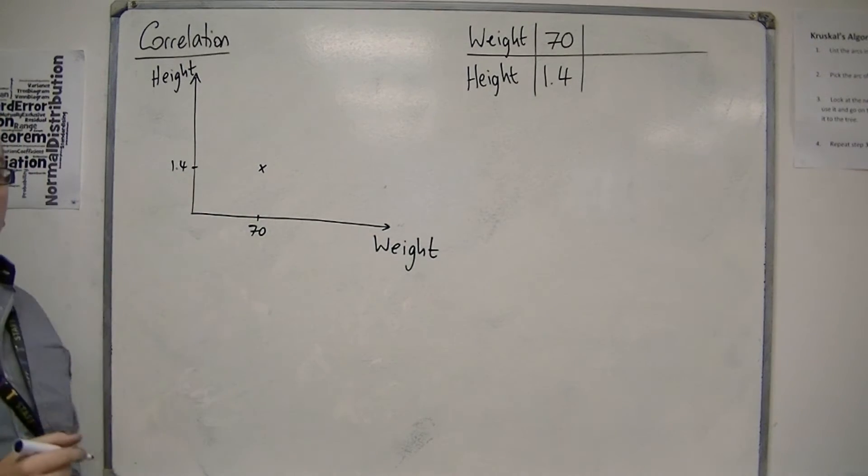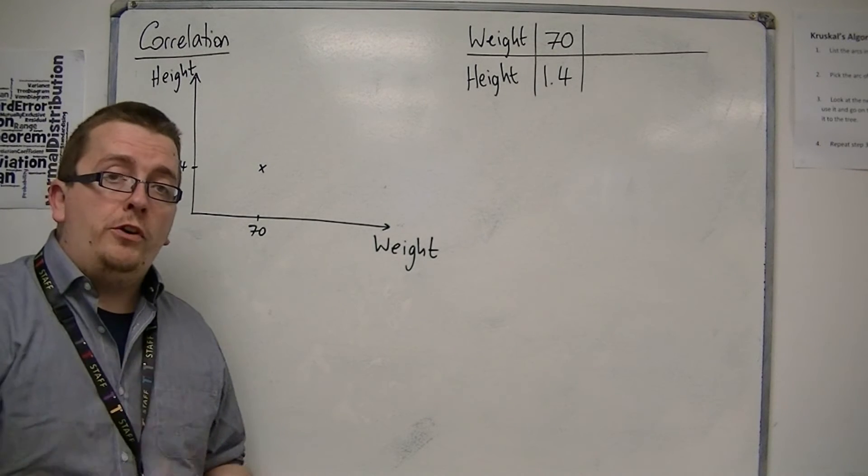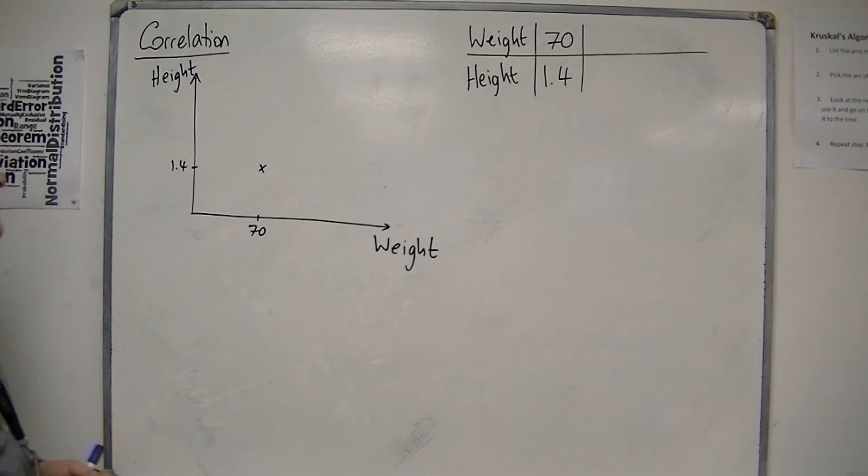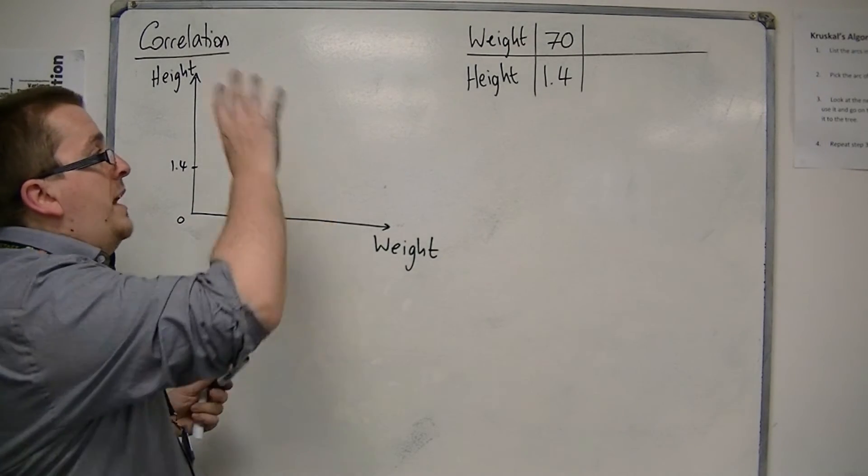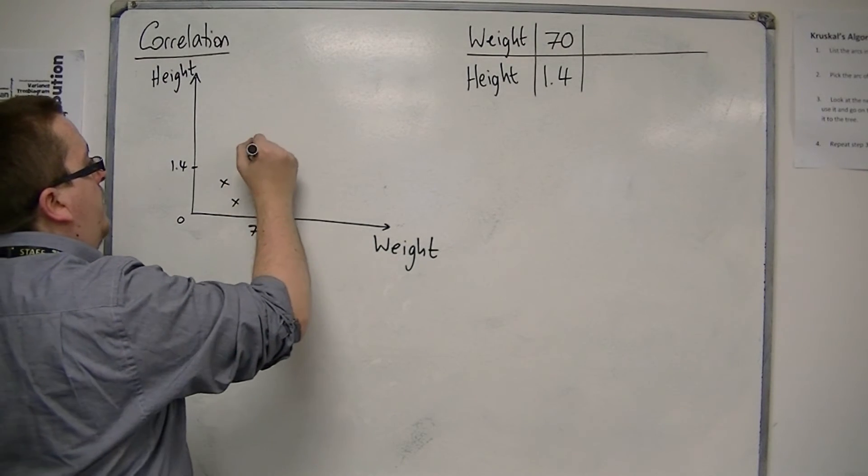And then we would mark a cross. Generally speaking, you can use crosses or dots, it doesn't matter. I personally prefer crosses. So you'd get a series of people, and then you would start plotting the points.